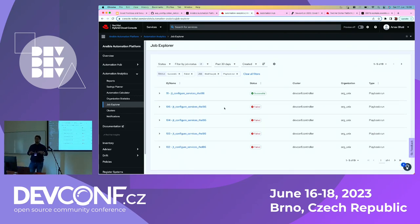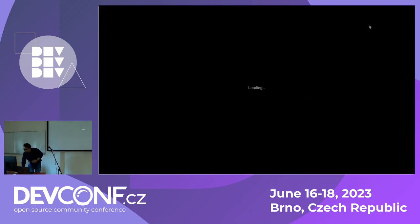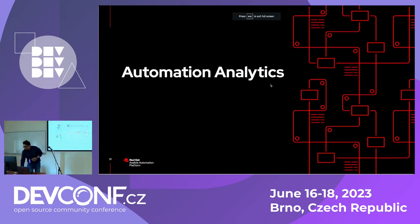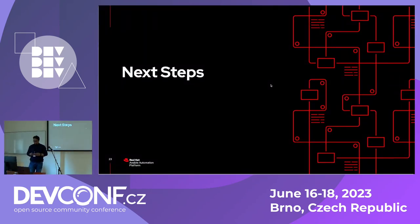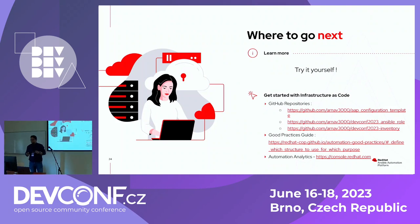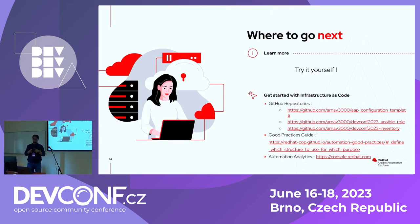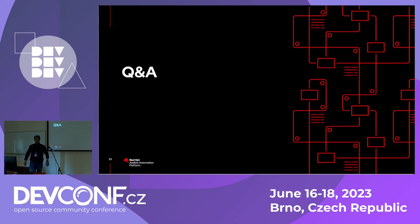This is what Ansible Automation Platform is all about — you get everything in a single package. As next steps, I've provided all the links to the GitHub repo, which are available for you. I just want you to try it out, play along with it, and give us your feedback. This entire PDF is linked to the session, so feel free to download it. And now it's time for Q&A.